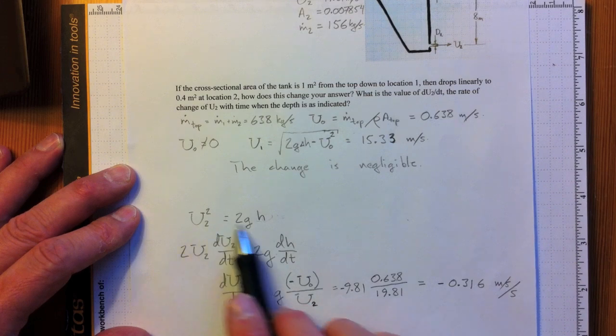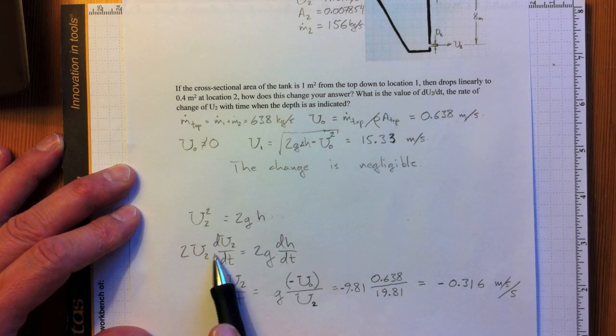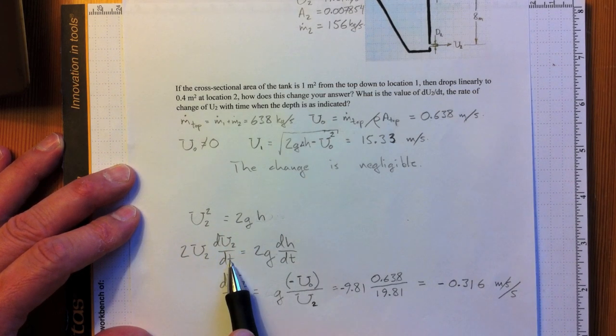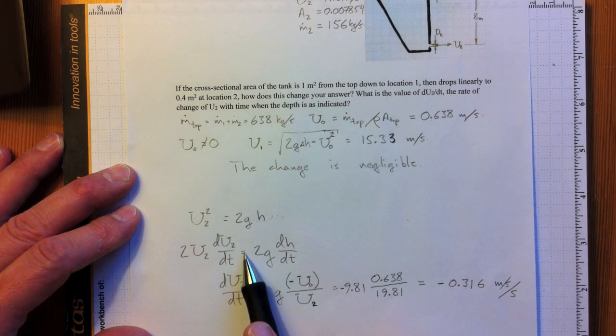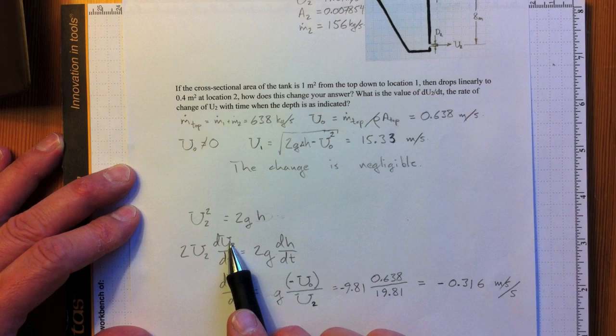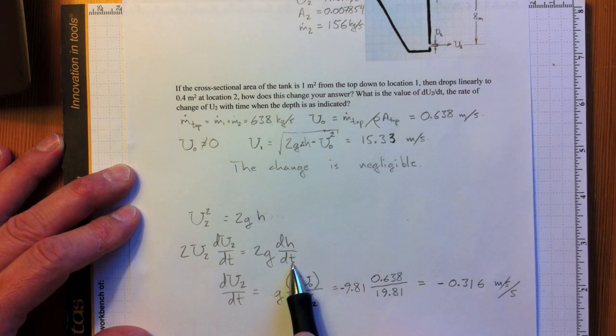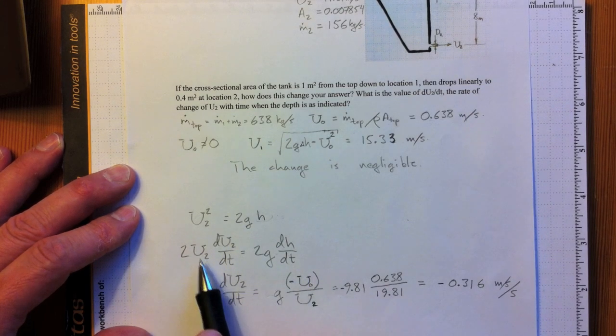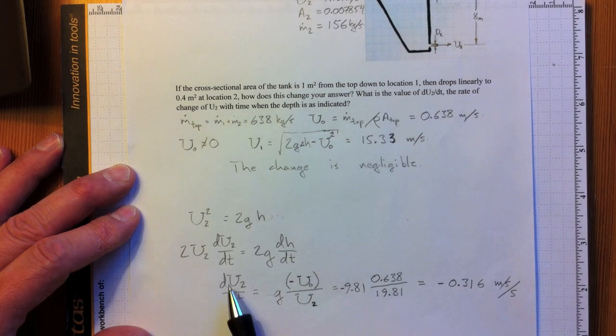If U2 squared is equal to 2GH, that's that height to that moving surface, then taking the derivative of both sides, 2U2 du2 dt with respect to time, equal to 2G times dH dt. U and H are the only things changing with time. Taking the U2 across to the other side,